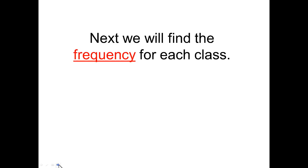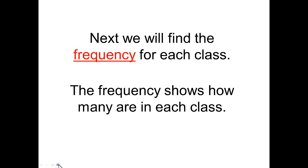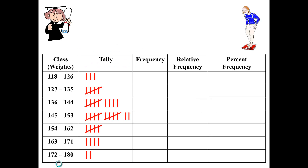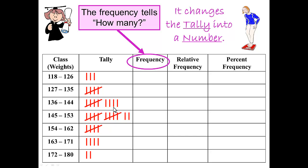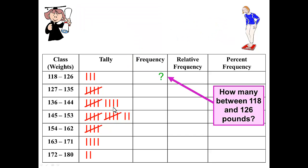Next we'll find the frequency for each class. The frequency shows how many values are in each class, so we change the tally marks into a number simply by counting. Between 118 and 126 we had three; between 127 and 135 we have five — and notice how easy it is to count that group of five.